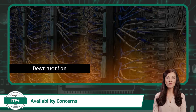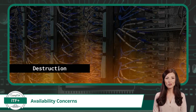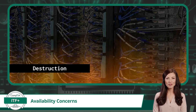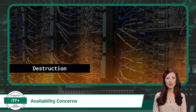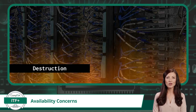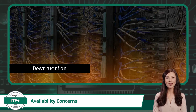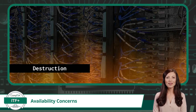External threats also pose significant risks. Destruction caused by natural disasters such as earthquakes, floods, or fires can physically damage infrastructure. Similarly, human-made incidents, whether accidental — like construction mishaps — or intentional — like acts of vandalism — can wreak havoc on physical assets, leading to availability concerns.